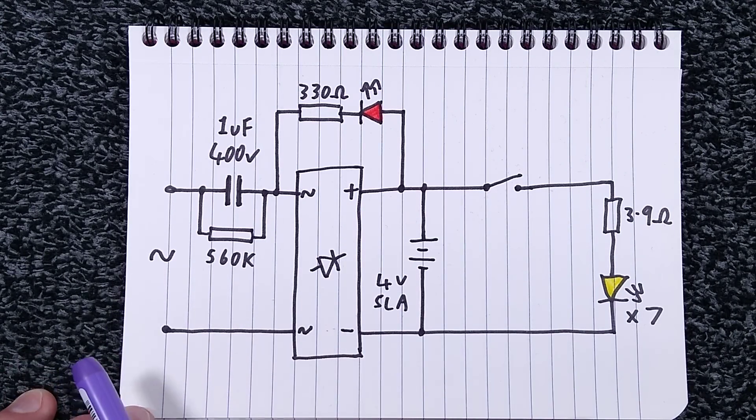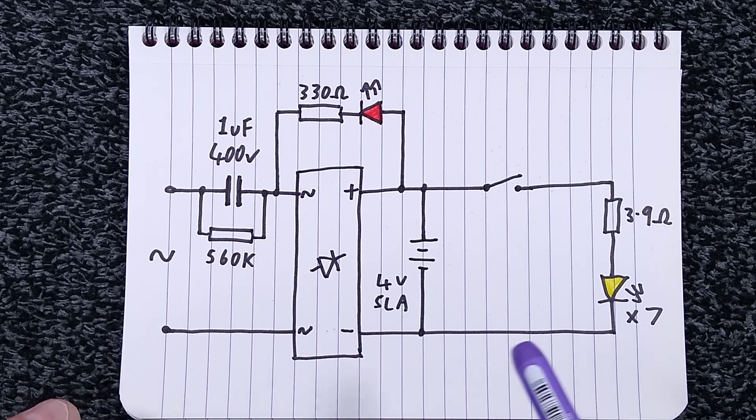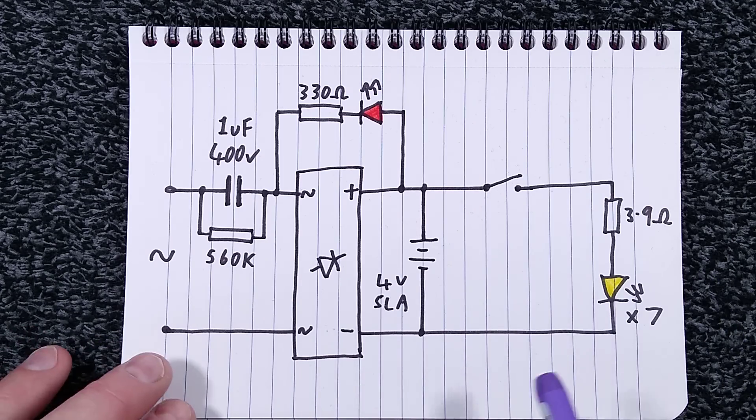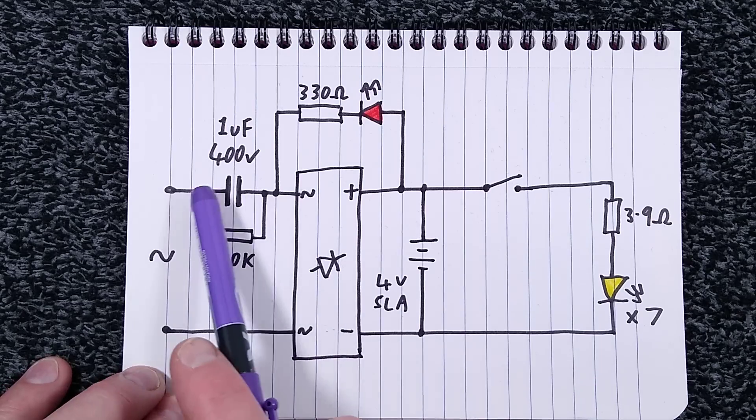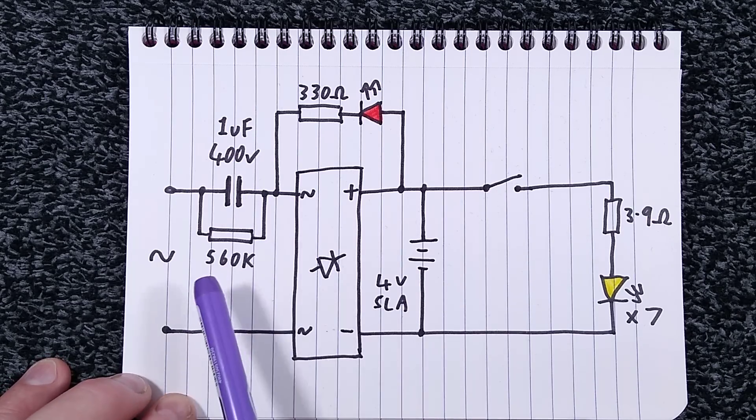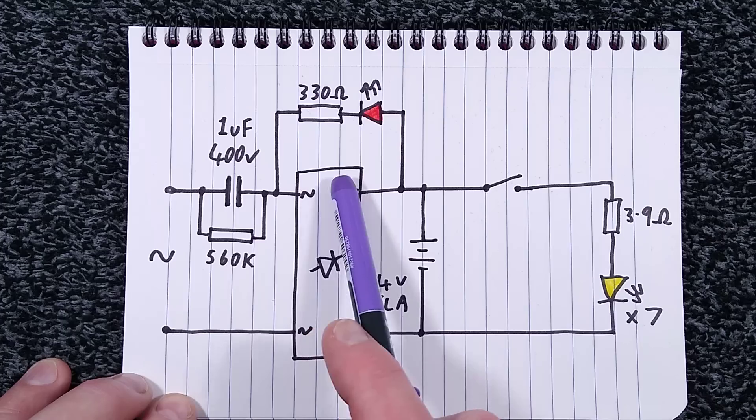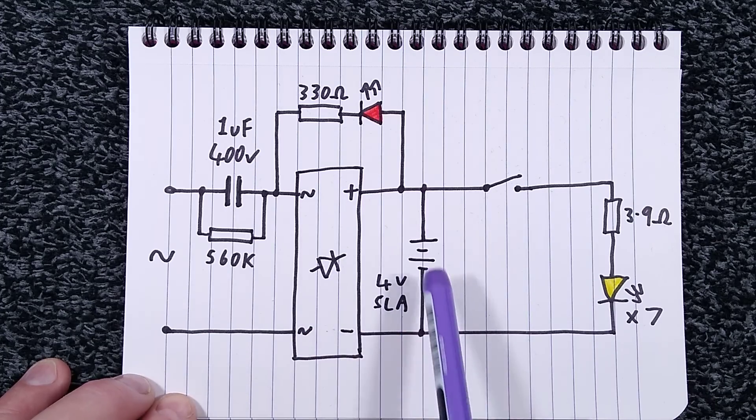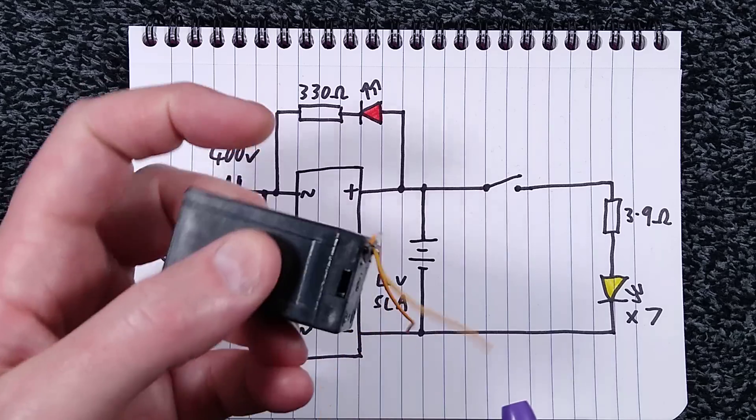I'll just double check that loud creaking noises from this cheap seat that is about to explode into pieces when I sit in it one day. There's a 400 volt capacitor. There's its discharge resistor. Here's the bridge rectifier straight to this sealed lead acid battery.